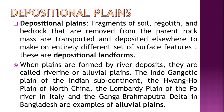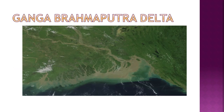Depositional plains are formed when fragments of soil, regolith and bedrock removed from parent rock are transported and deposited elsewhere. When plains are formed by river deposits, they are called riverine or alluvial plains. Examples include the Indo-Gangetic plain of the Indian subcontinent, the Huanghe plain of North China, the Lombardy plain of the Po River in Italy, and the Ganga-Brahmaputra delta in Bangladesh, also known as the Sundarbans.